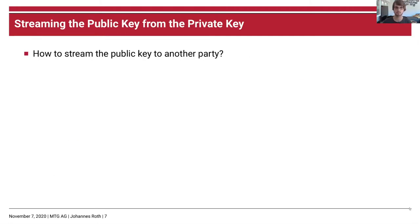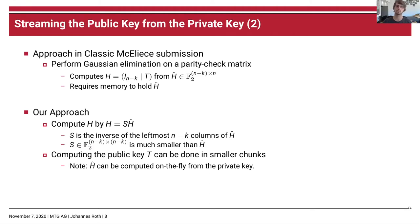Let us first look at the case where the public key is streamed from the device that holds the private key. The standard approach computes the public key as the parity check matrix in systematic form via Gaussian elimination, but this requires storing the complete matrix H-hat, which is even bigger than the public key itself. Our approach looks at the problem from a different angle: we express the result of the Gaussian elimination by the equation H equals S times H-hat, where S is the inverse of the leftmost n minus k columns of H-hat. S is much smaller than H-hat.